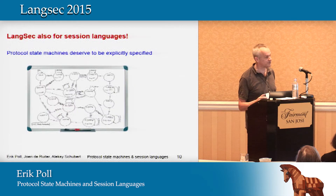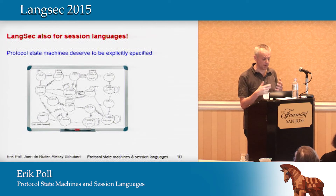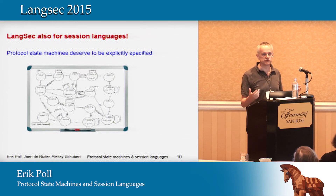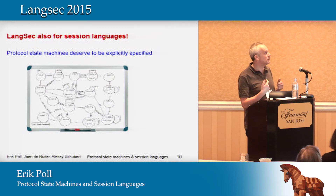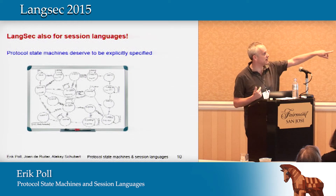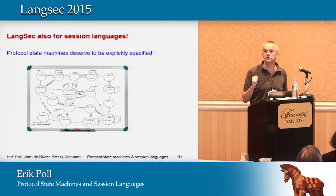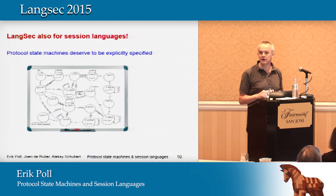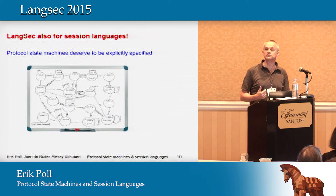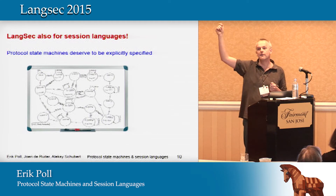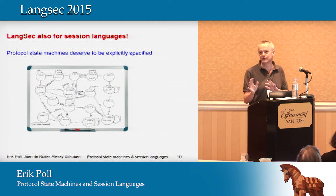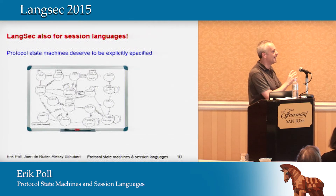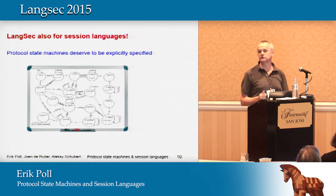The first thing I'd like to propose is that protocol state machines are important and deserve to be explicitly specified. My guess is that people who design protocols typically have a whiteboard with their finite state machine. But when they write the RFC, it's hard to include it, so they leave it out and give prose instead. Then people who implement the protocol read all the prose, go back to their whiteboard and redraw the diagram. If you're lucky it's identical — but the chances are it's slightly different.